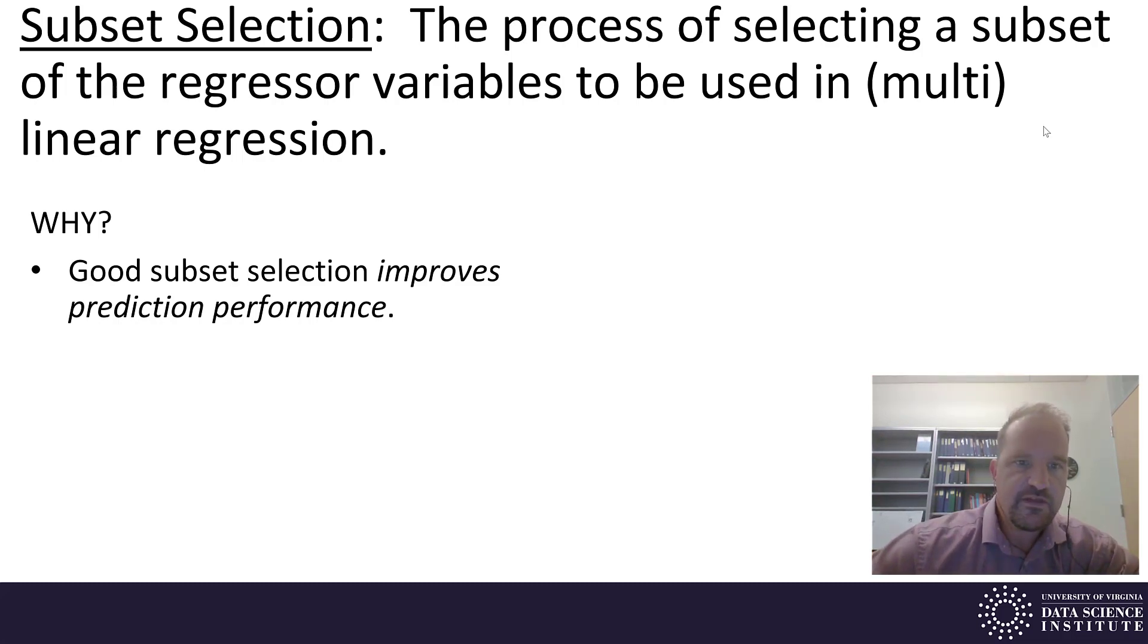So why do we want to use a subset of the regressor variables instead of using all of them? Well, for one thing, good subset selection improves prediction performance. This makes sense. If you have ten regressor variables, five of them are useful for predicting your output and five are just random unrelated variables, then trying to work with all ten you're going to have some non-zero coefficients estimated for those irrelevant variables most likely, and then you'll wind up making predicted values that are based on things that are not relevant for your outputs.